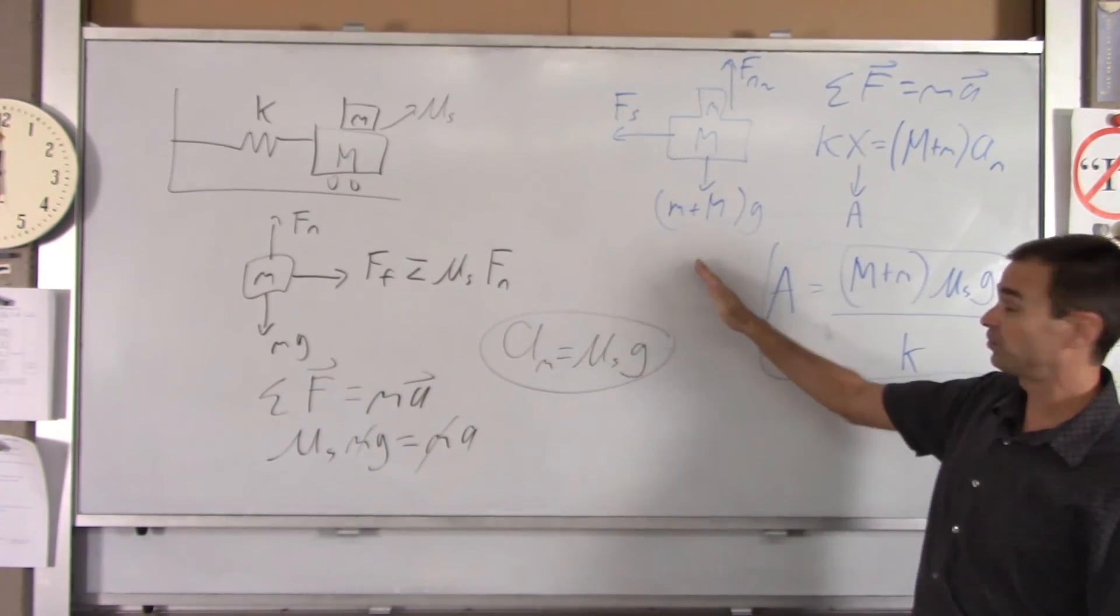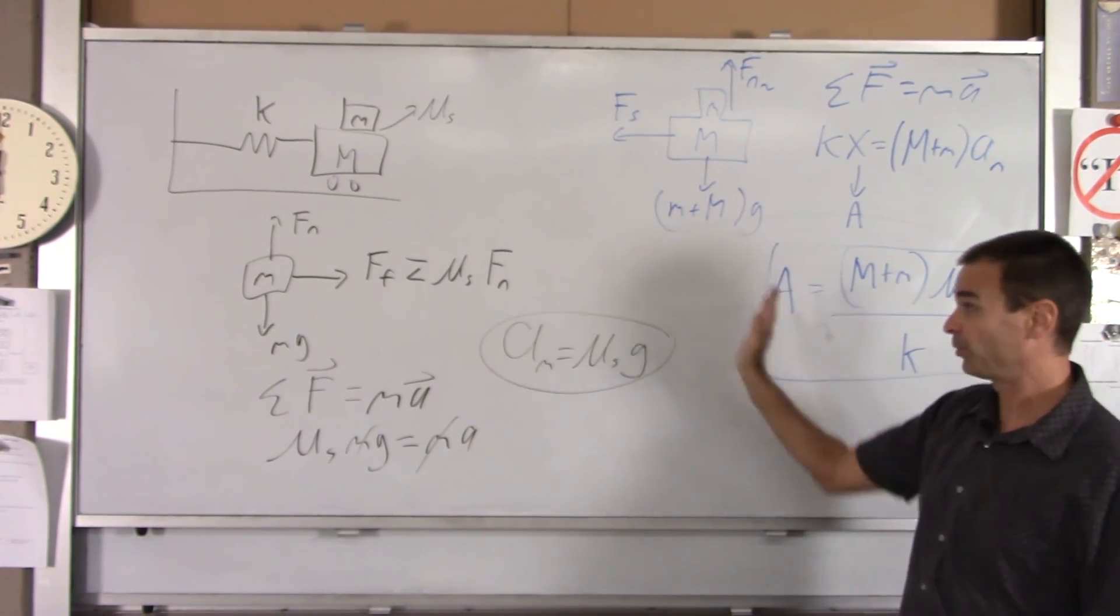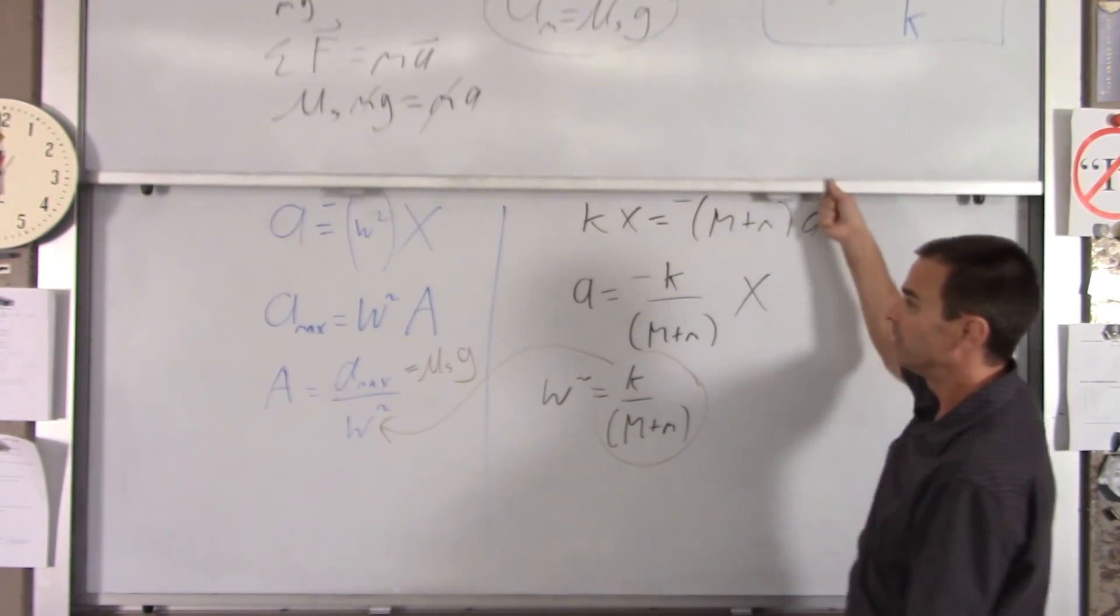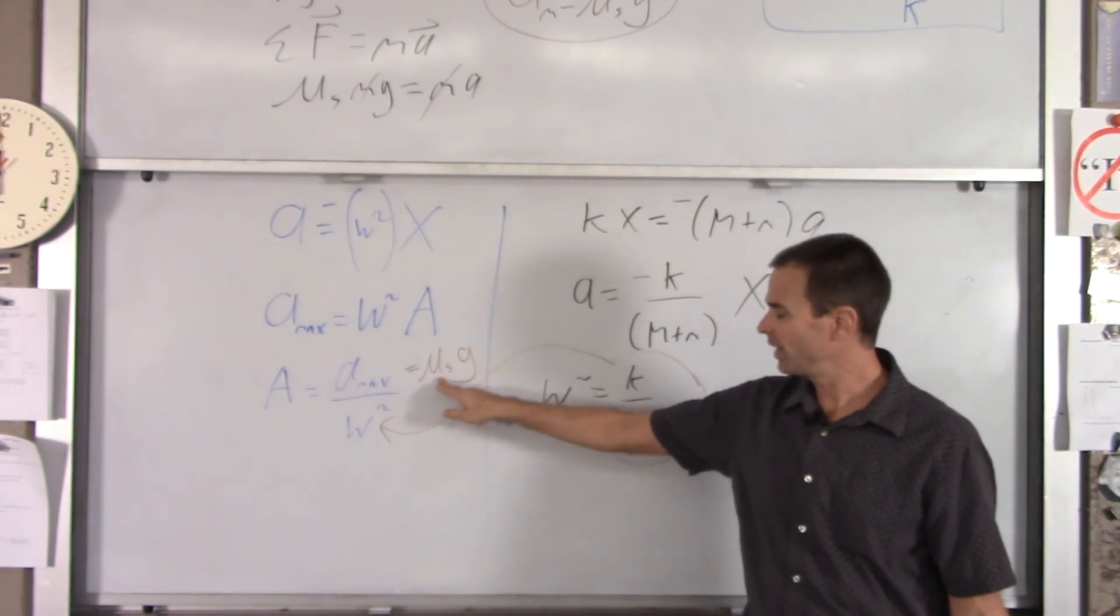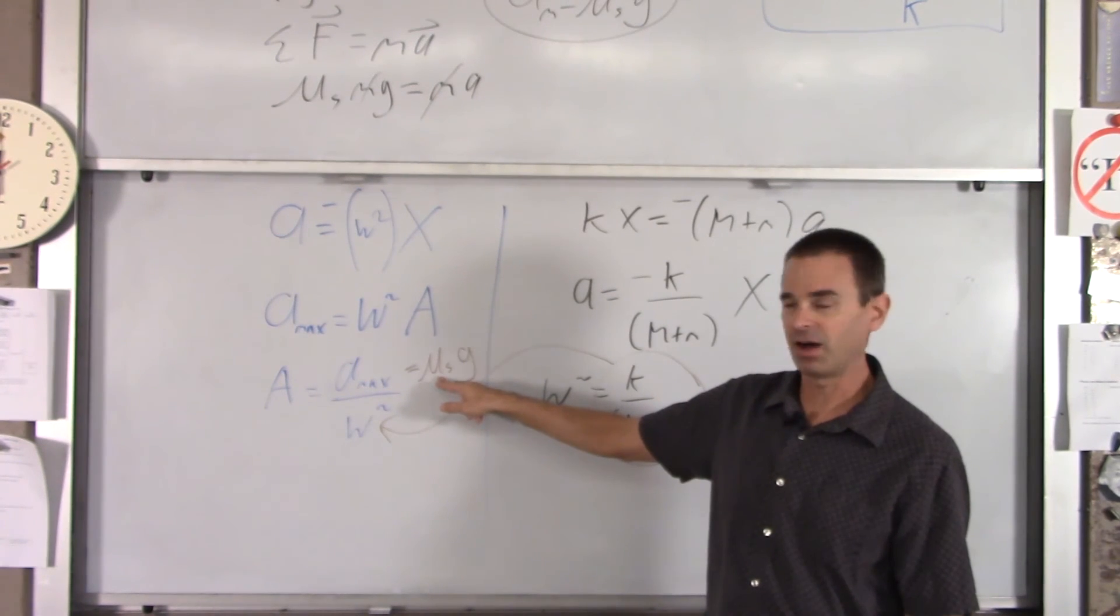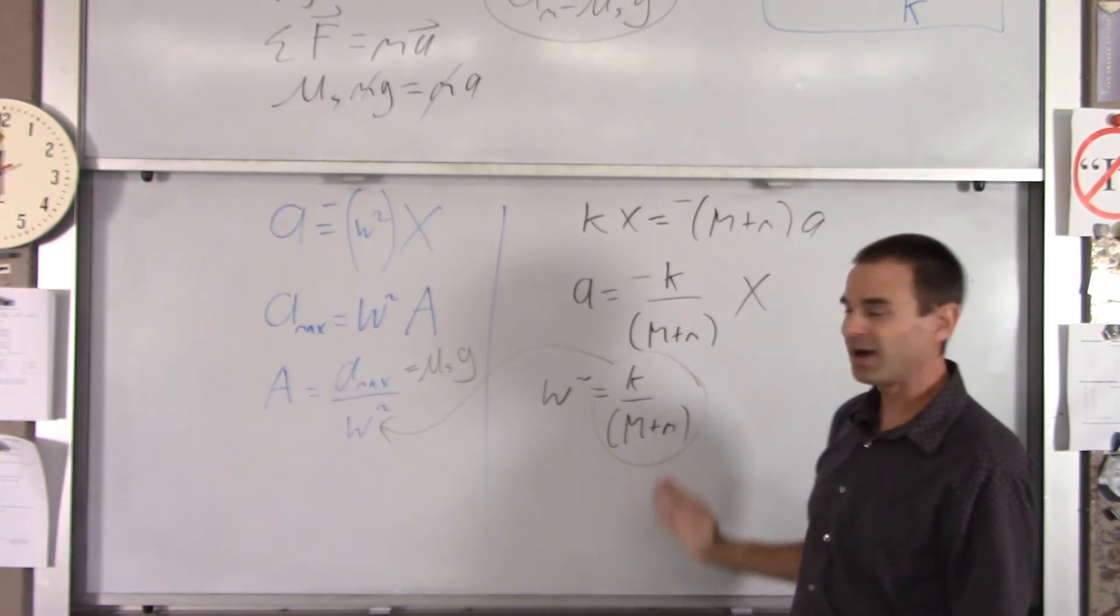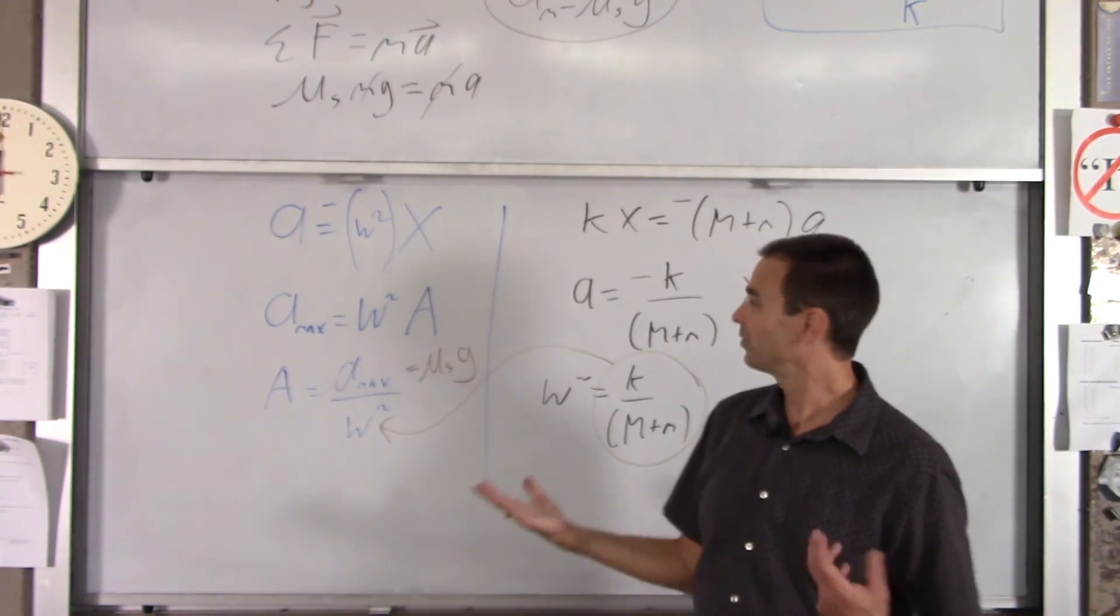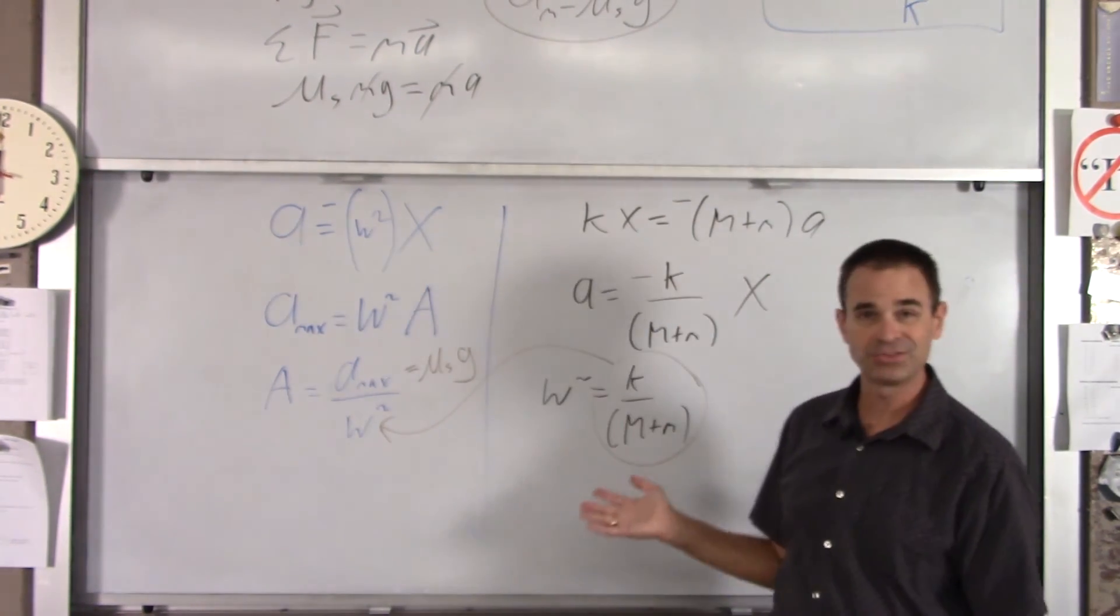Here, we just used straight up Newton's second law a couple times, one for the little block, one for both. In this example, in this part of the example, we still have to find a max by using Newton's second law, but then we use simple harmonic motion to figure out what the amplitude of our motion was. So, you can do either one or both about the same amount of effort, I'd say.